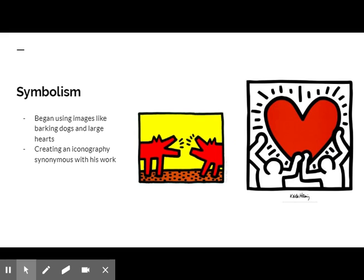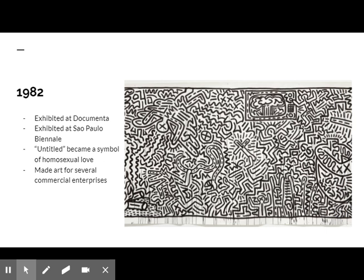In the early 80s, Haring used found objects and simple materials from hardware stores to create his work. 1982 was an important year for Haring. He was featured in the Documenta Art Fair in Germany, as well as the Sao Paulo Biennial in Brazil. Between 1982 and 1989, Haring created more than 50 public artworks in dozens of cities around the world. One of his works from 1982, Untitled, depicts two figures with a radiant love heart motif.